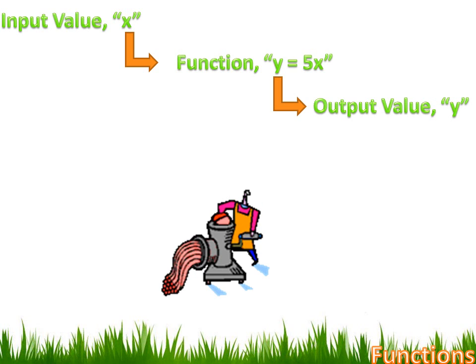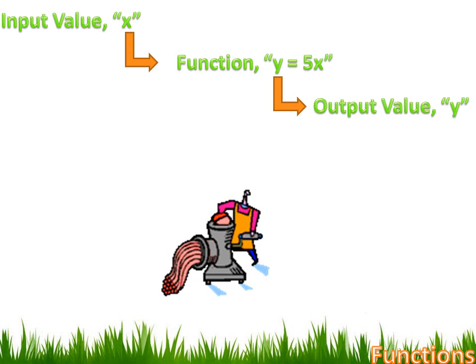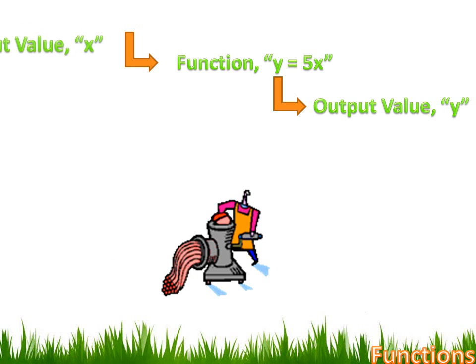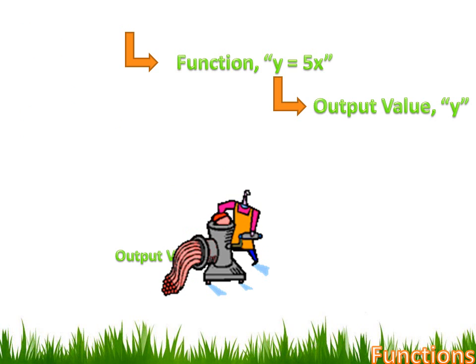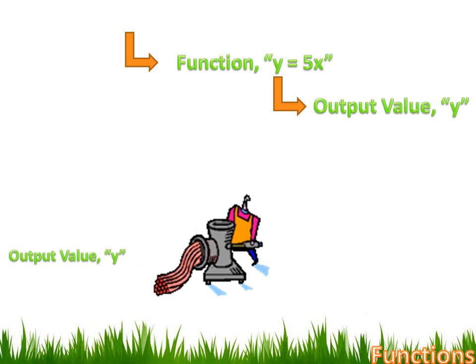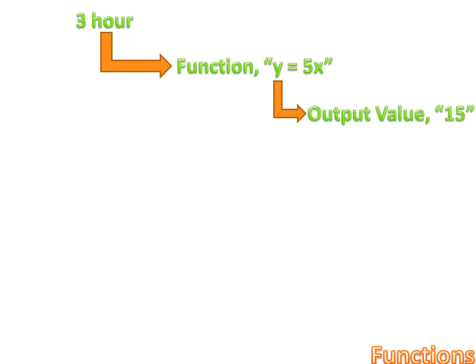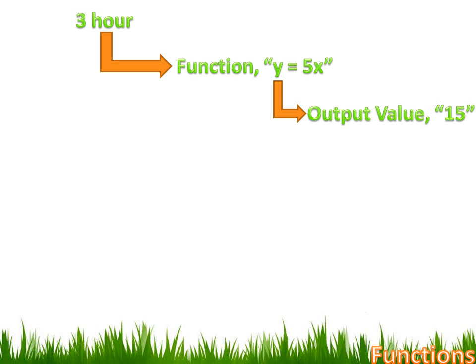A function is a little bit like a meat grinder, because the function is going to change what you put into it and what comes out will be different. I input my x value into this function and out comes a y value. So we know we earn $5 an hour for mowing lawns, and we've created a function that will help us figure out how much we'd make for any different number of hours worked.